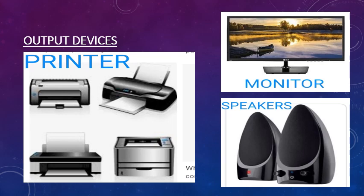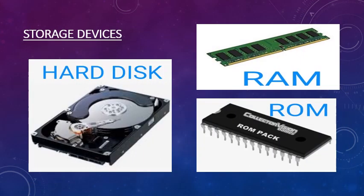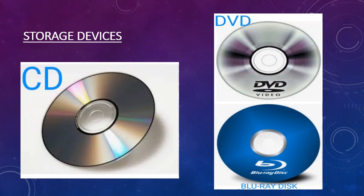Some output devices are: printer, monitor, and speaker. Now let's see the storage devices: hard disk, RAM, ROM. Some more storage devices — CD, full form Compact Disk; DVD, full form Digital Versatile Disk or Digital Video Display.